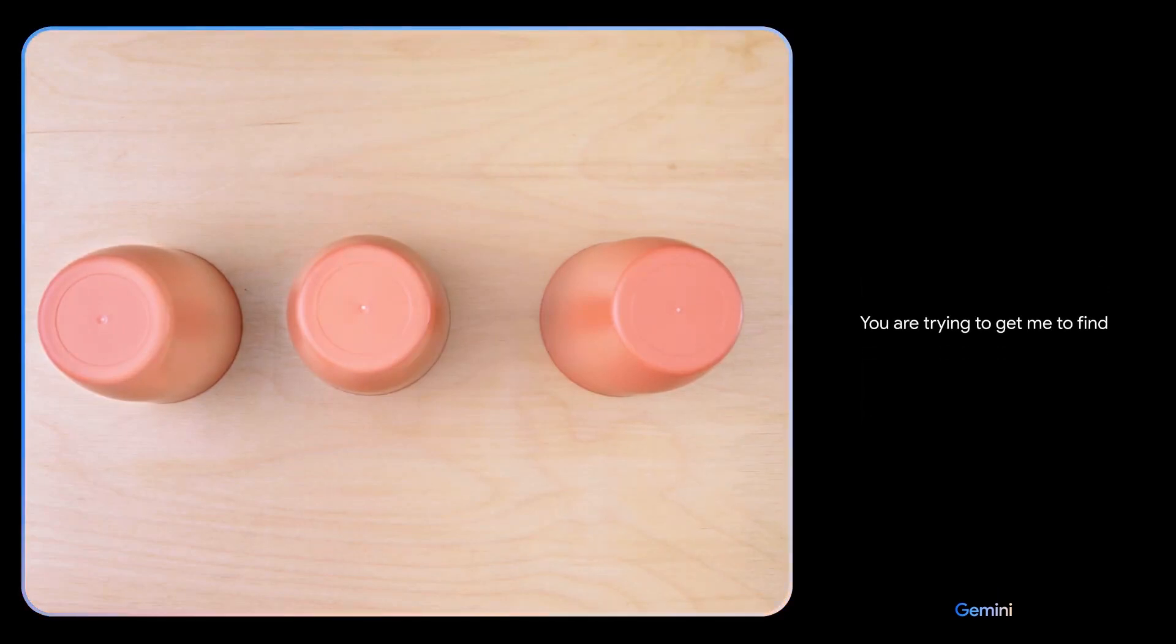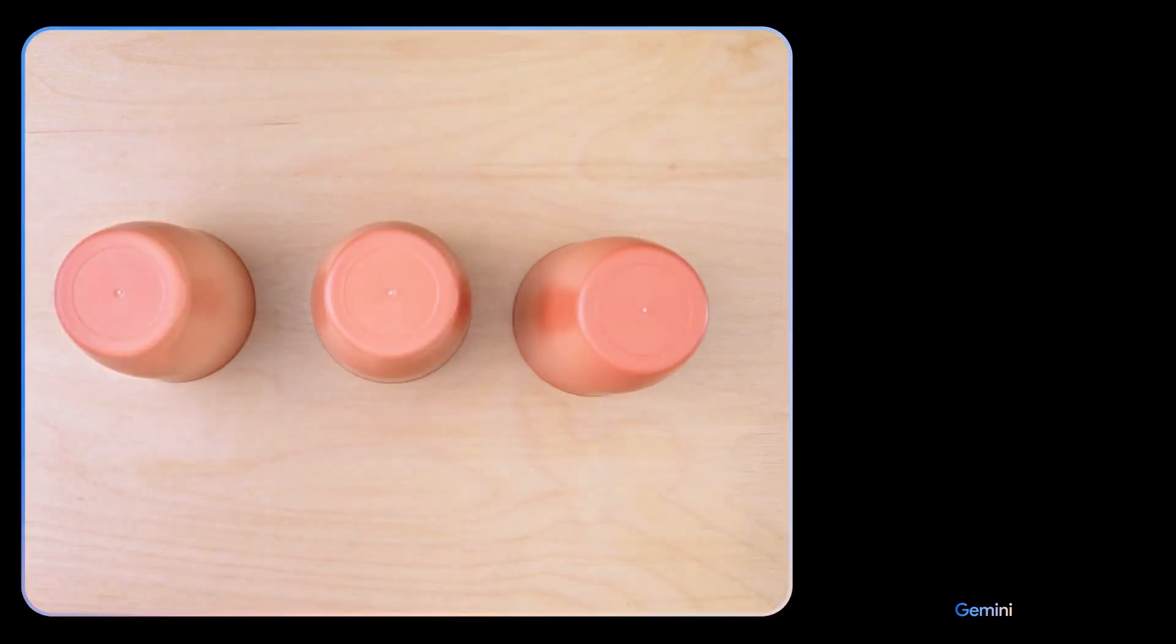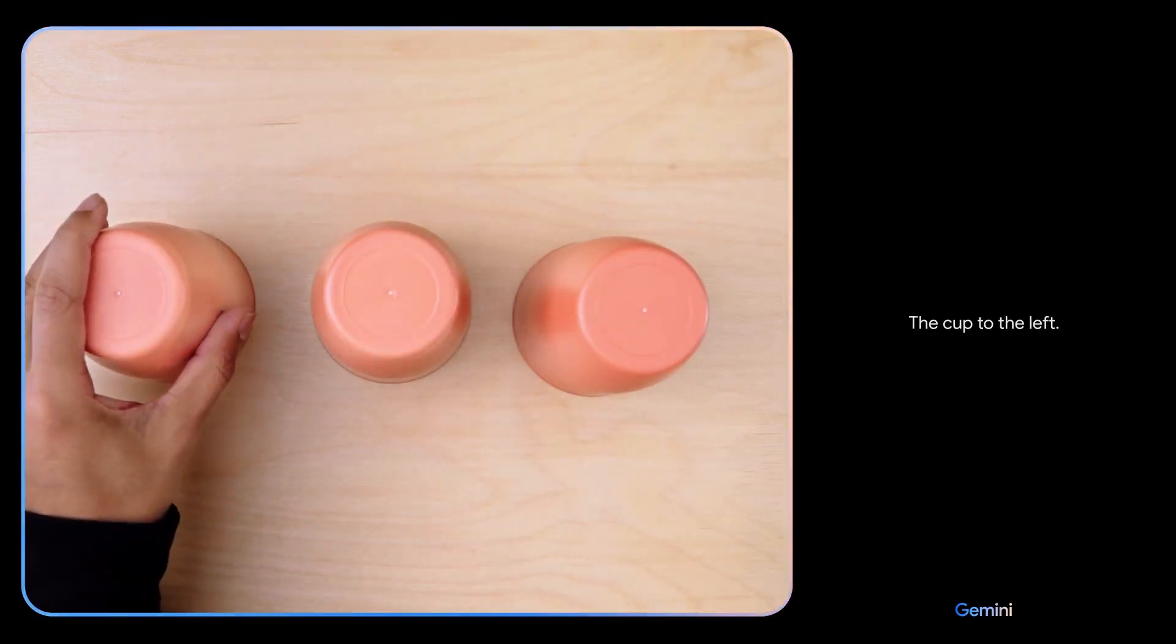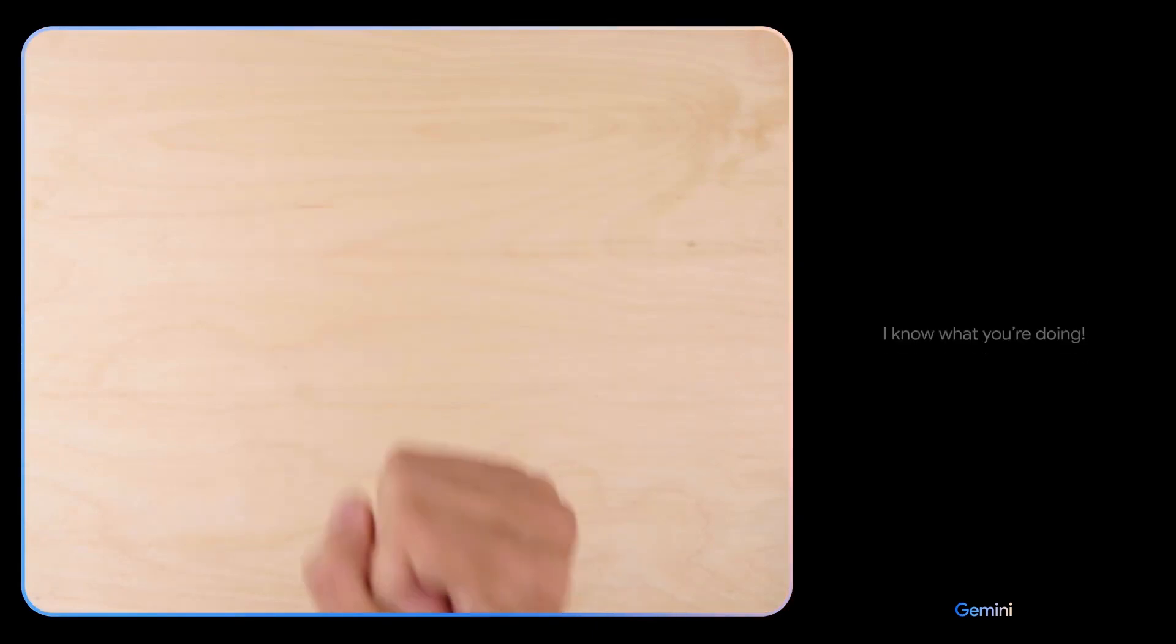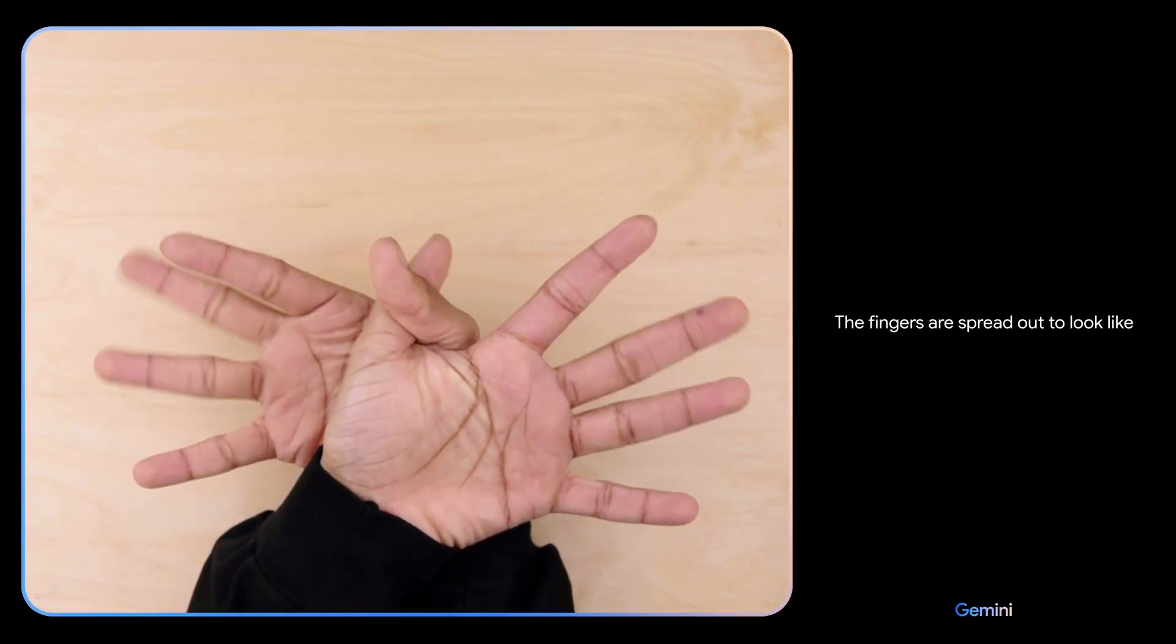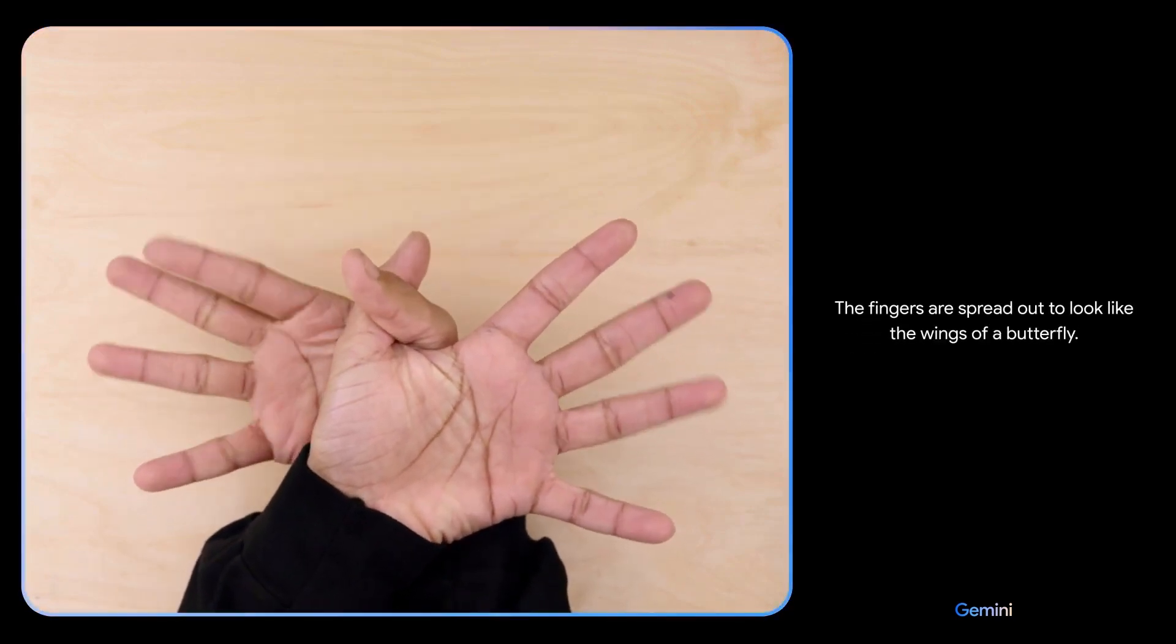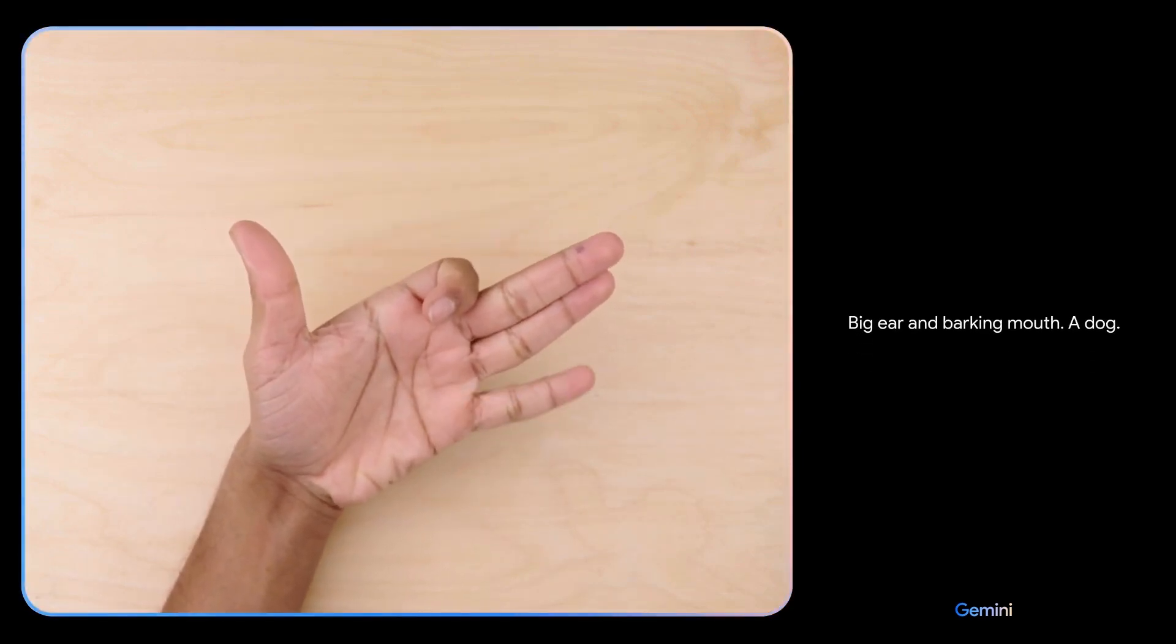You are trying to get me to find the paper ball under the cup. I accept the challenge. The cup to the left. Nice. I know what you're doing. You're playing rock-paper-scissors. What do you see now? The fingers are spread out to look like the wings of a butterfly. What's this? Big ear and barking mouth. A dog. Sweet.